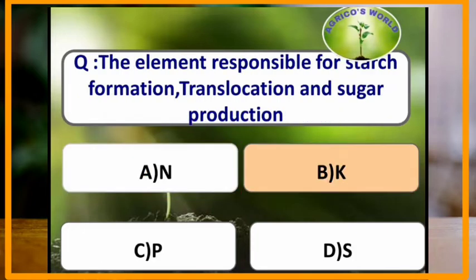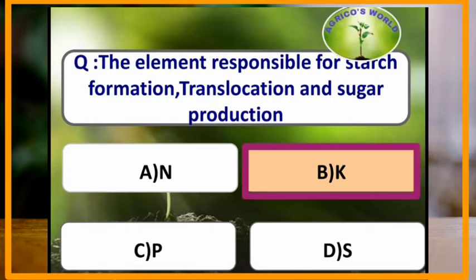The element responsible for starch formation, translocation and sugar production is potassium. Potassium is the element which is responsible for starch formation, translocation and sugar production.